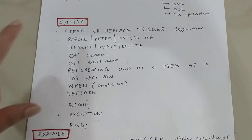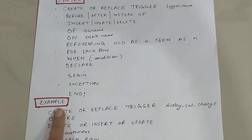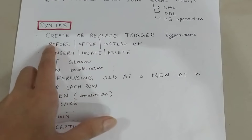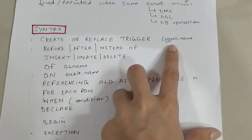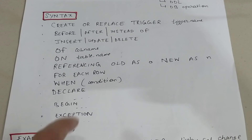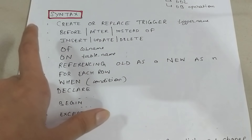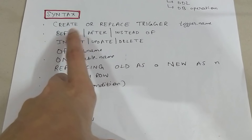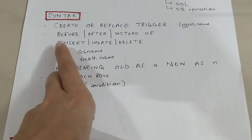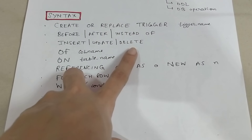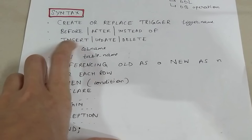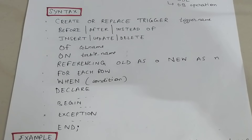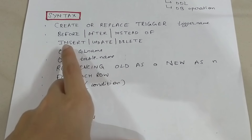Let's see the syntax, and then an example — the example will make triggers very clear. The syntax is: CREATE OR REPLACE TRIGGER, then you give a name to it. You also specify when you want this trigger to be fired — it could be BEFORE, AFTER, or INSTEAD OF. Then you specify the event: INSERT, UPDATE, or DELETE.